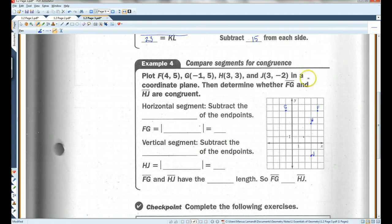Then determine whether FG and HJ are congruent. So here's FG, and here's HJ.